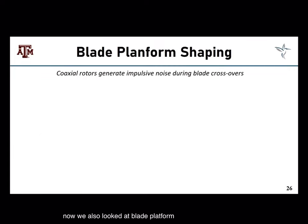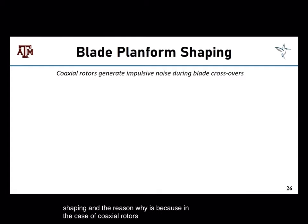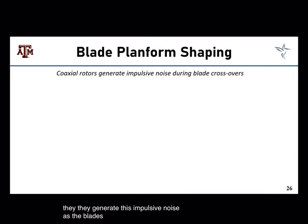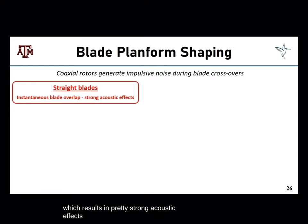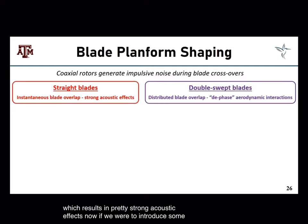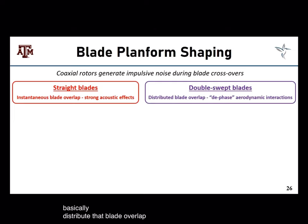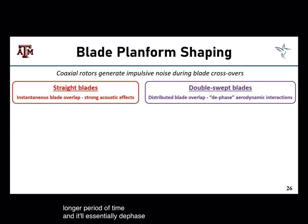We looked at blade planform shaping because coaxial rotors generate impulsive noise as the blades pass over each other — known as blade crossover events. With straight blades, you get instantaneous blade overlap, which results in strong acoustic effects. If we introduce a double swept design, that distributes the blade overlap over a longer period of time, essentially dephasing these aerodynamic interactions and making the sound much softer and more pleasant.